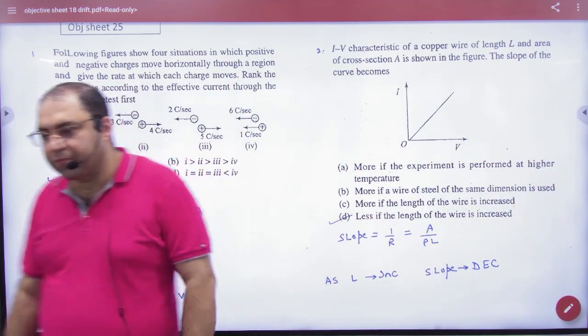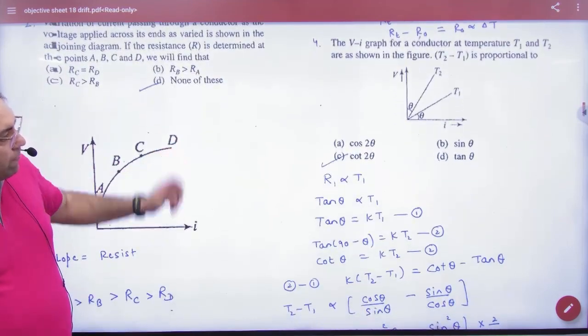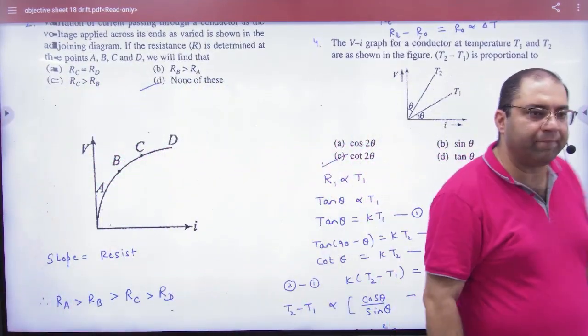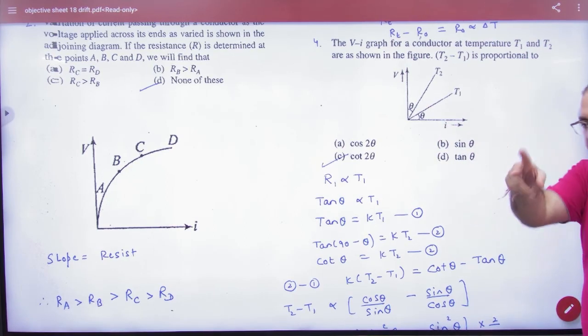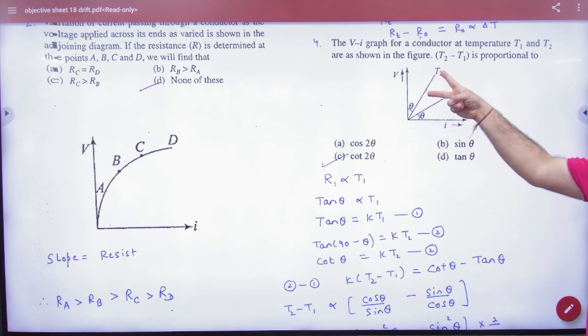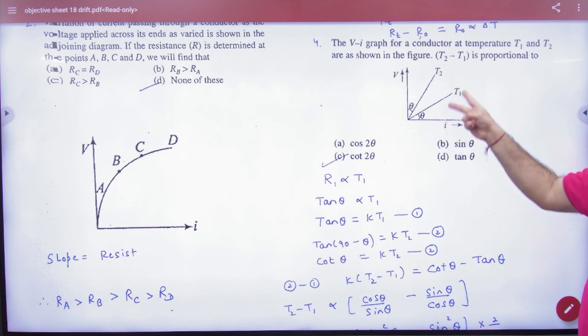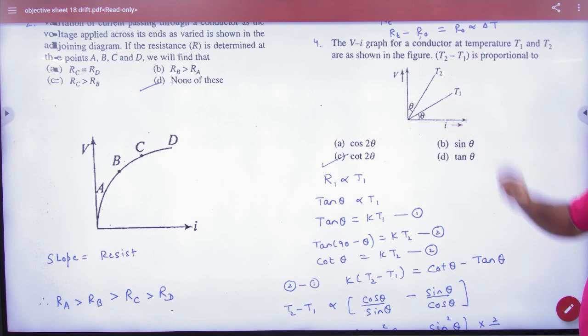And in that way, this question is, then one time, VI characteristics. Voltage current slope will give you resistance. Temperature is T1. It's clear that this curve is more than this. So T2 is bigger and T1 is small. Slope? T1's slope is tan theta.